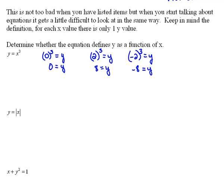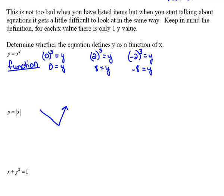We looked at y equals x cubed first, and we decided that yes, this is a function. We looked at it both by choosing a few points, and then we also looked at it by graphing it on our calculator. We also looked at y equals the absolute value of x, and we saw that it was this v-shaped graph. So any vertical line that we were to pass down through that would only pass in one spot. So this was a function also.